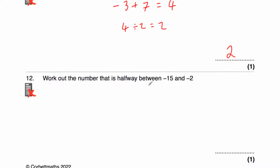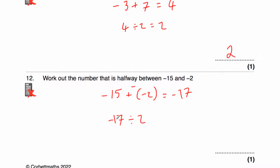Question twelve says: work out the number that's halfway between negative 15 and negative 2. So negative 15 plus negative 2: when you add a negative number it goes down, so we're taking away 2. Negative 15 goes down by 2 to negative 17. Now we need to do negative 17 divided by 2. Half of 17 is 8.5, so half of negative 17 is negative 8.5. So the answer is negative 8.5.